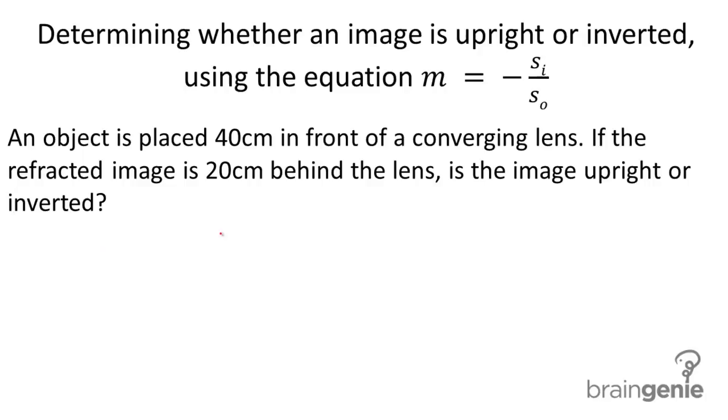Okay, so we are given M, or we're given SI, I apologize. SI is the distance of the image, and that's 20 centimeters. And we're also given SO, which is the distance of the object from the mirror, which is 40 centimeters.